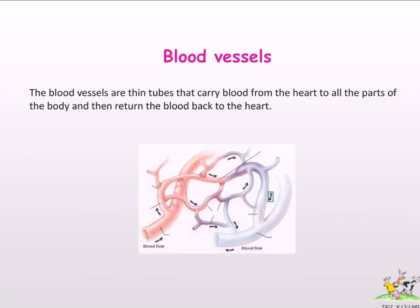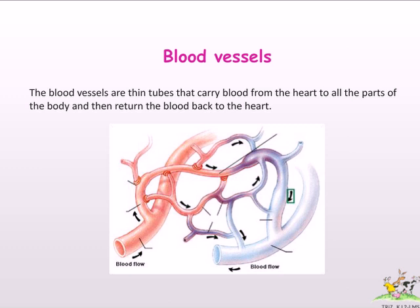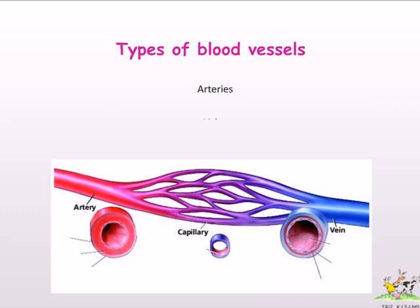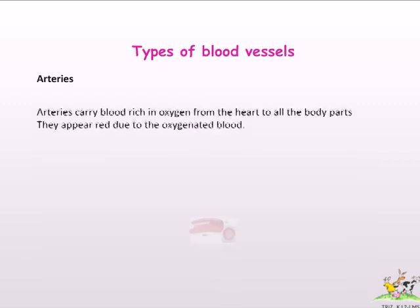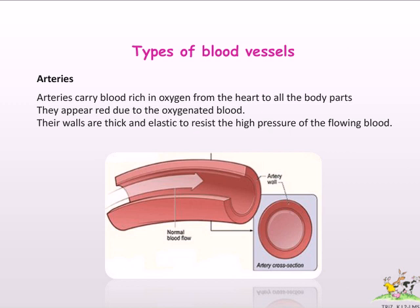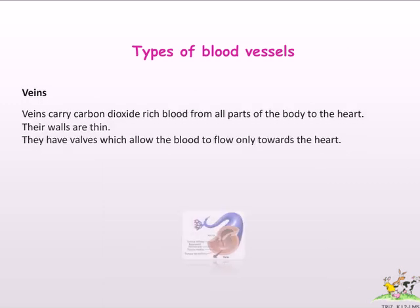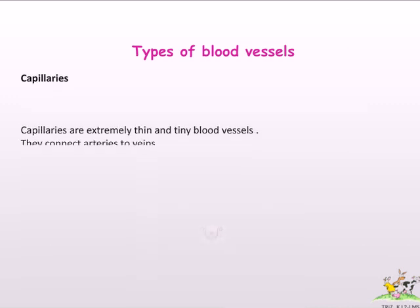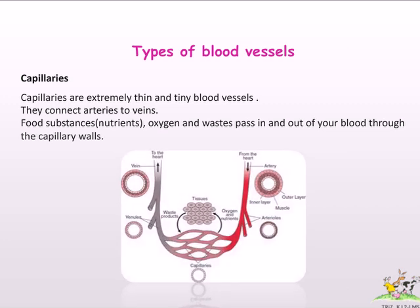Blood vessels are thin tubes that carry blood from the heart to all parts of the body and return blood back to the heart. There are three types: arteries, veins, and capillaries. Arteries carry blood rich in oxygen from the heart to all body parts; they appear red and have thick, elastic walls to resist high pressure. Veins carry carbon dioxide-rich blood from all parts of the body to the heart and have thin walls that allow blood to flow only toward the heart. Capillaries are extremely thin and tiny blood vessels that connect arteries to veins; nutrients, oxygen, and waste pass in and out of blood through capillary walls.